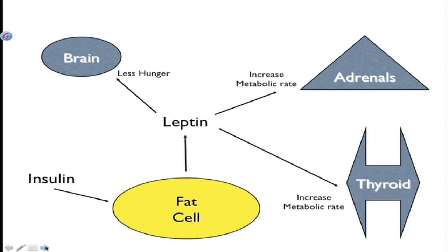Insulin causes fat cell growth. Leptin is released. Leptin goes to the brain, adrenals and thyroid and says, hey, let's eat less, right, and let's burn more because we got fat we need to lose. That's the normal response to the body. That's how a normal metabolism should respond.